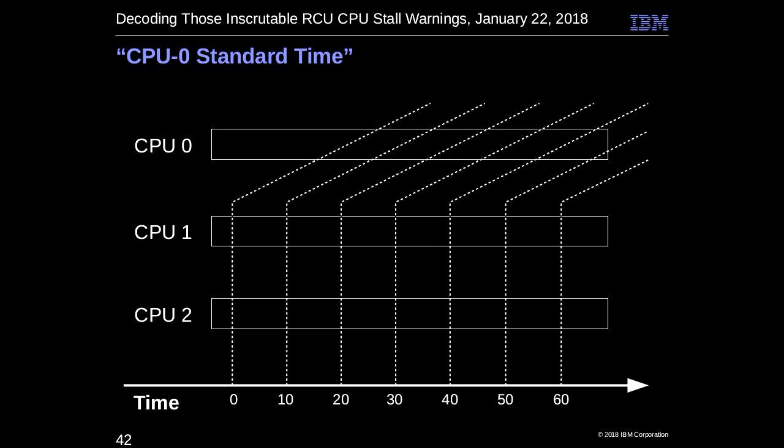My favorite war story is CPU zero standard time. People bringing up new architectures can have this problem — different CPUs have a different idea of what time it is. If the CPU that's ahead or behind in time starts the grace period, CPU zero thinks it's T equals zero, then CPU one comes along and says wow, it's T equals 30 and this grace period isn't done yet — stall warning. Even though no time has actually passed. If you're bringing up a new system or changing your clock system and getting stall warnings, that might be a hint to check your patches on the timing.